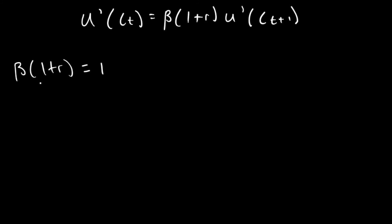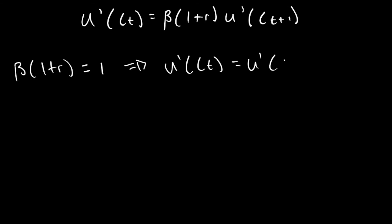Now, logically, we look at the case where beta(1+r) is equal to 1. When this is equal to 1, we can quite obviously see that the marginal utility of consumption at time t is going to be equal to the marginal utility of consumption at time t plus 1. This means that ct is going to equal ct plus 1. So when our rate of time preference relative to the interest rate is equal to 1, we observe perfect consumption smoothing over the two periods — at time t and at time t plus 1.